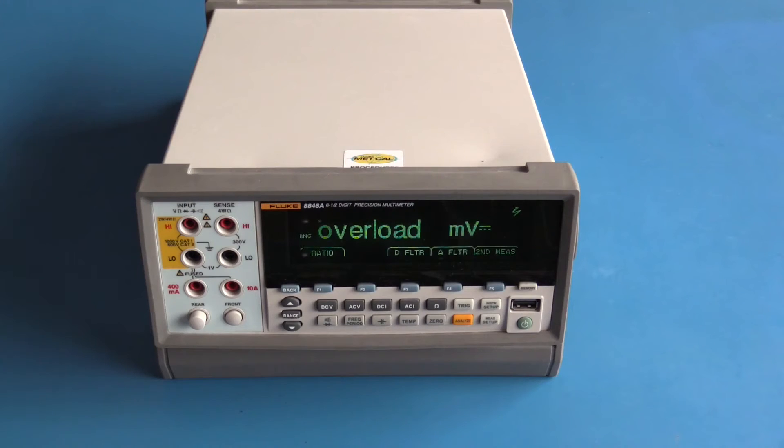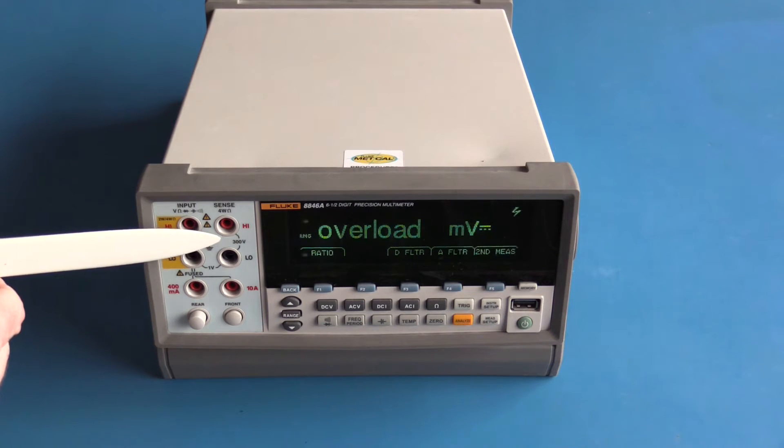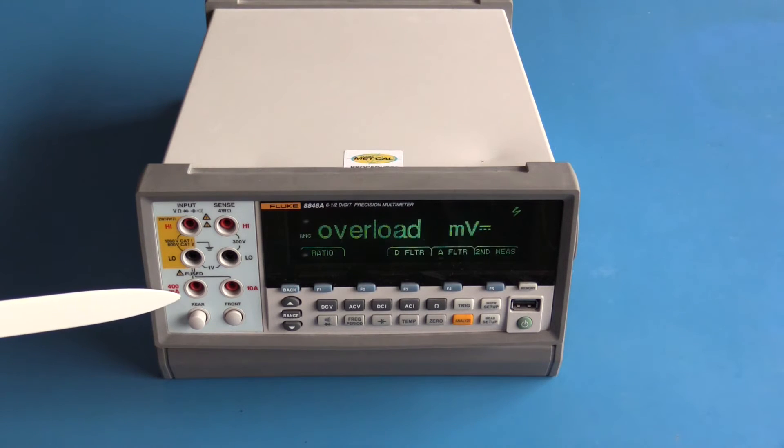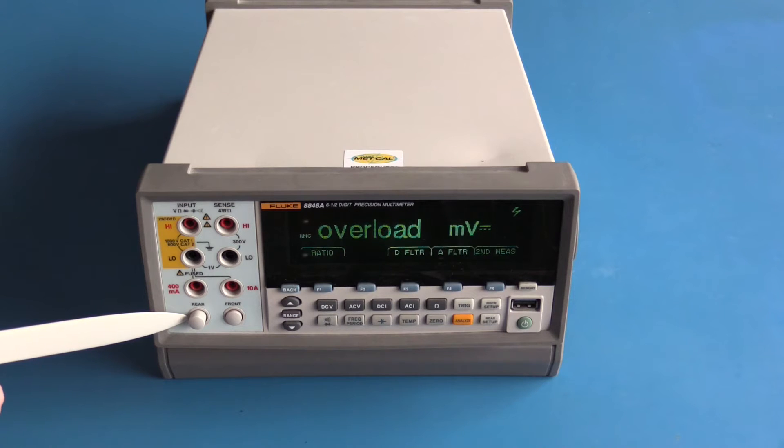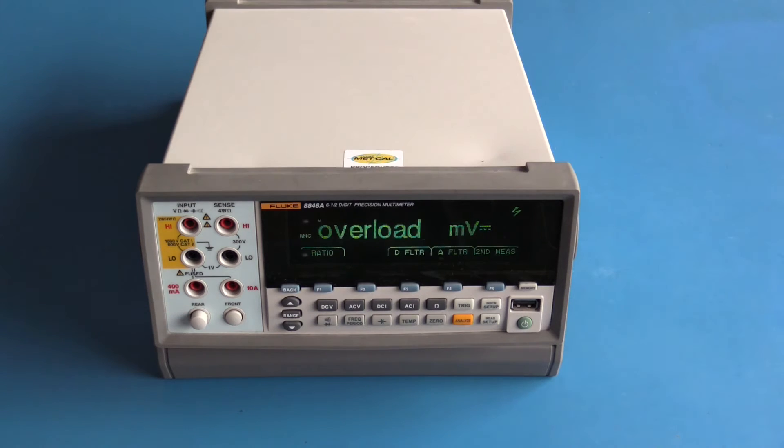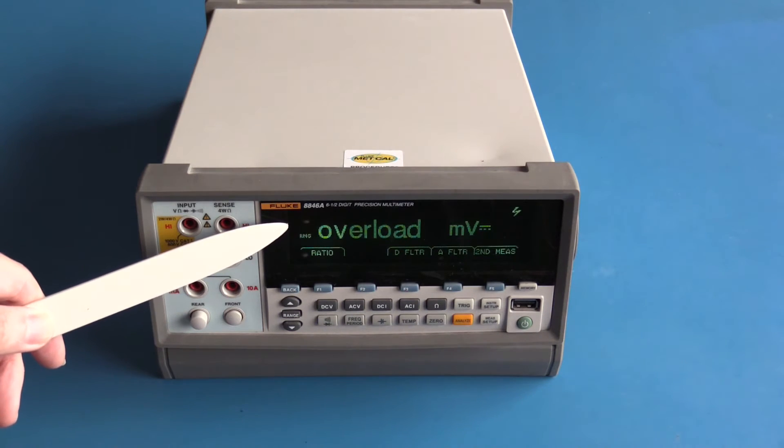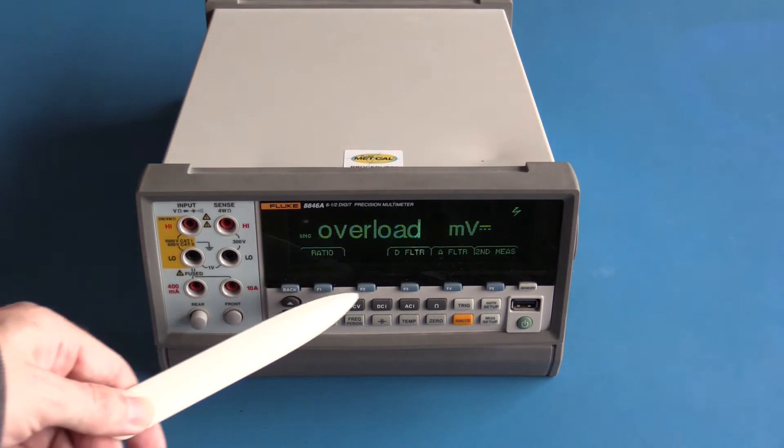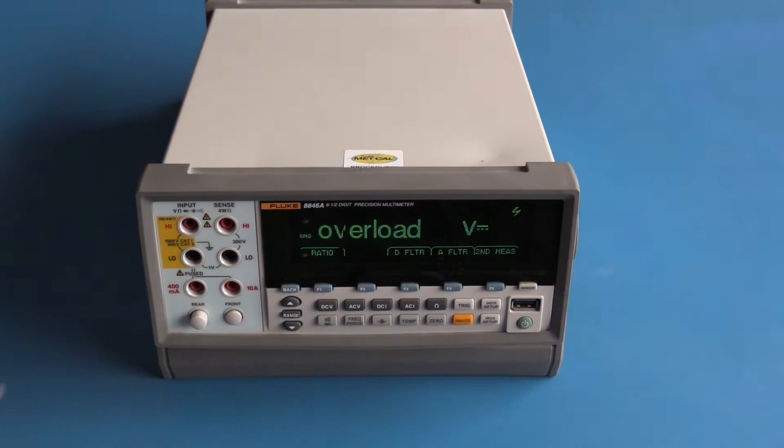So let's take a look at this Fluke 8846a six and a half digit precision multimeter on the bench. At the front of this meter we have our two primary input jacks, our two sense jacks for current measurement, we have the 400 milliamp jack as well as a 10 amp jack. This bench multimeter also has jacks on the back. For the purposes of this review we'll be using the front input jacks.